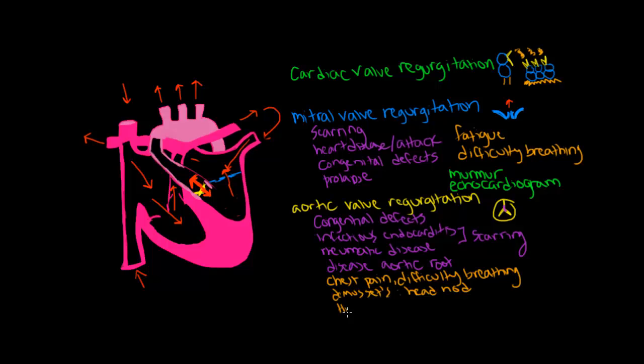Additionally, there's also Hill's sign. Hill's sign is when the blood pressure of the lower extremities, the blood pressure of the legs, will be higher than the blood pressure of the arms, for example. That would be noticed on physical exam.